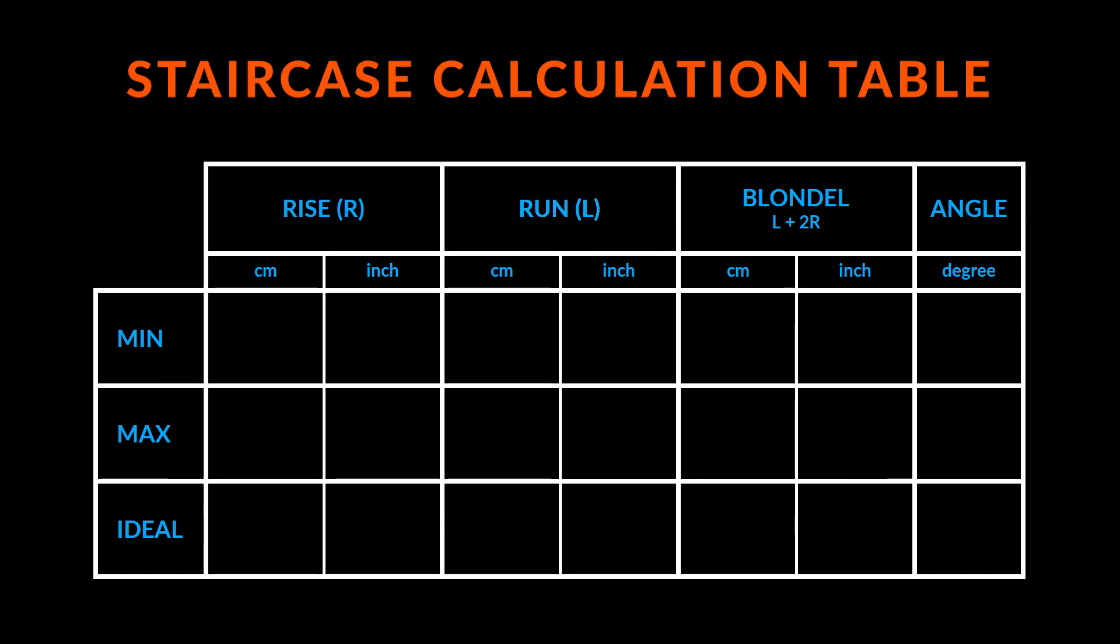To resume, I have compiled in a simple table all the necessary information to make a staircase. In this table, you can find the minimum, maximum, and ideal values for the rise and run of a staircase, as well as the values for the Blondel formula and the corresponding total slope angle of a staircase. Of course, you can use any value you want as long as you are happy with it, but these are the best values to keep a staircase comfortable and safe to use.